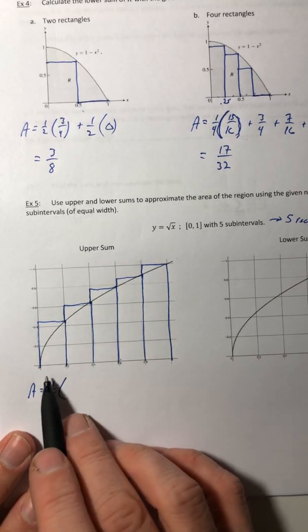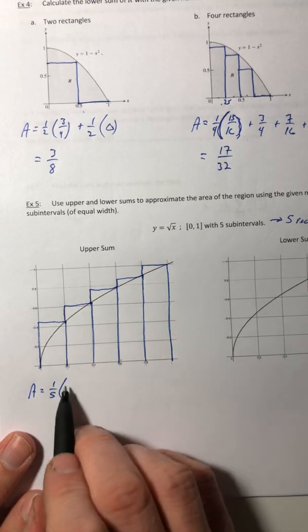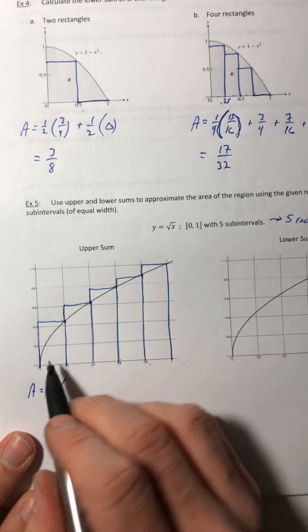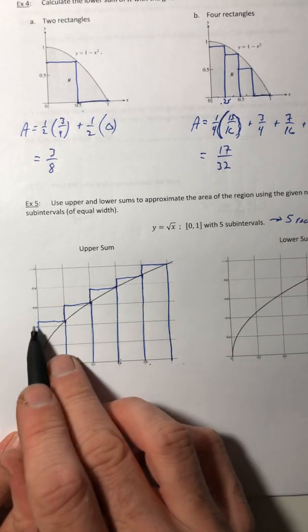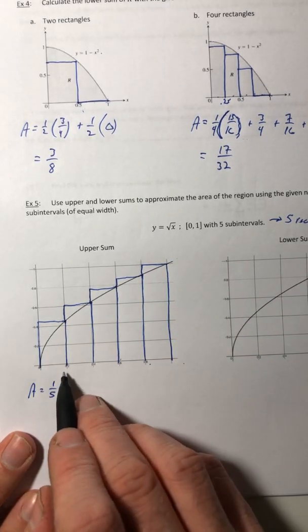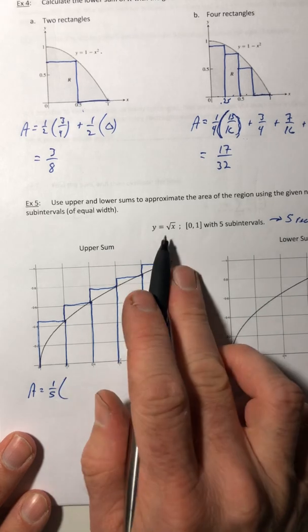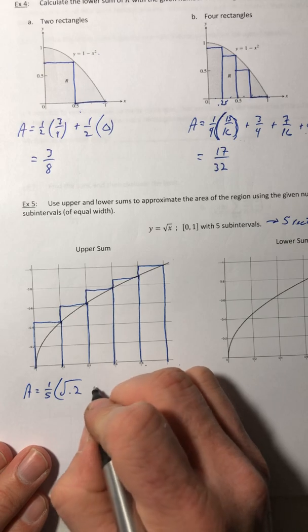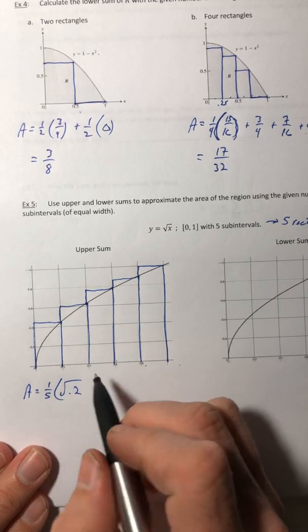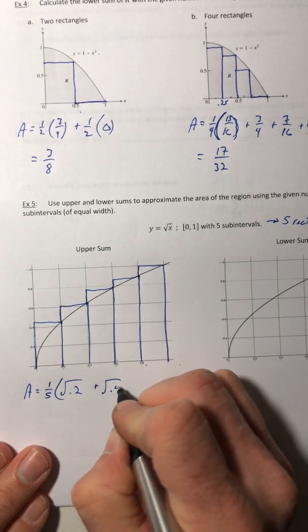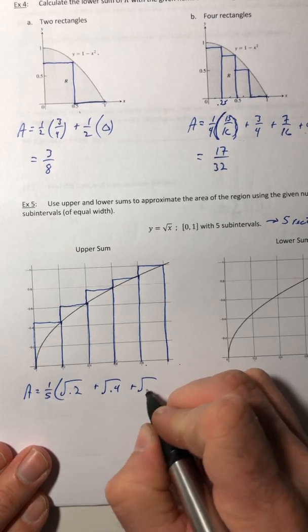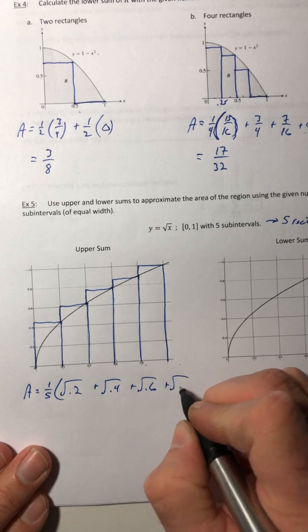So for the heights, you're going to plug in those certain x values into your function and just see how it comes out. So the height for first rectangle number one is going to be given by x equals 0.2. So plug it in and you get root 0.2 and then just keep going. So then root 0.4 plus root 0.6 plus root 0.8.